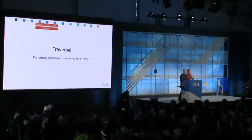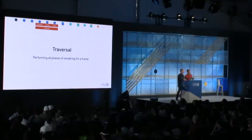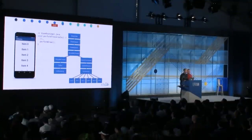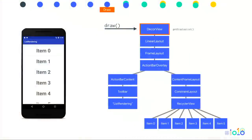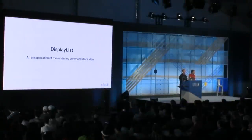Traversal is the process of doing all phases necessary for rendering the frame: measure — how big the views are; layout — setting the views' position and size; and drawing the views. We've scheduled a traversal, and that happens now. In the same frame, we end up in the traversal code in performTraversals. It calls performDraw, which ends up calling a draw method on the DecorView, propagating all the way down. The draw method ends up in an optimization implemented back in Honeycomb called getDisplayList.